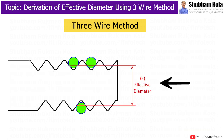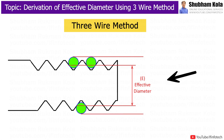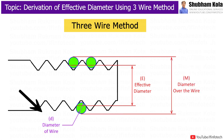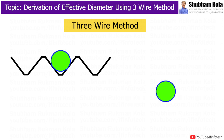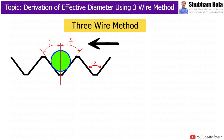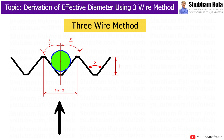Here, capital E is the effective diameter of screw thread, M is the diameter over the wire, and small d is the diameter of the wire. We consider the thread profile where a circle represents the wire diameter. The angle of thread is represented as x, and half of thread angle is x/2. Capital H is the depth of thread, and pitch P is the distance from the peak of one thread to the corresponding peak on the next thread.